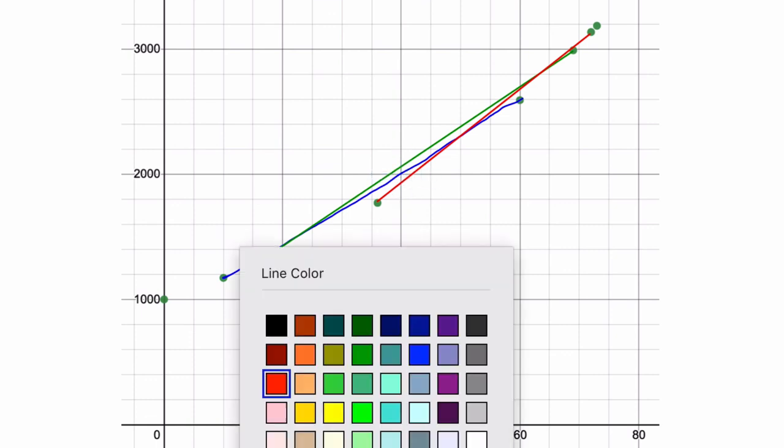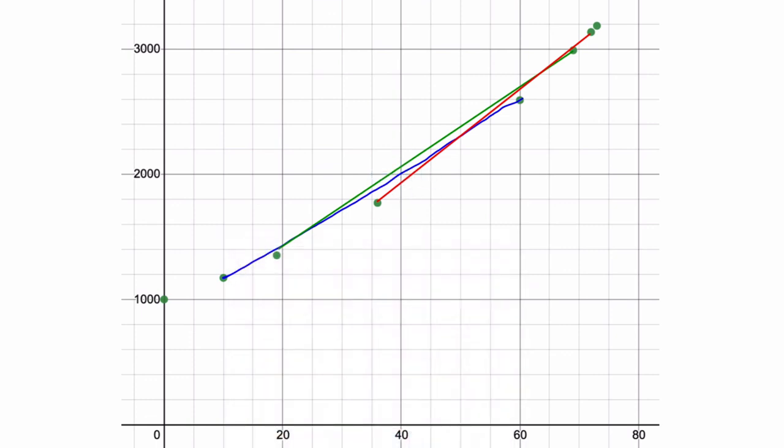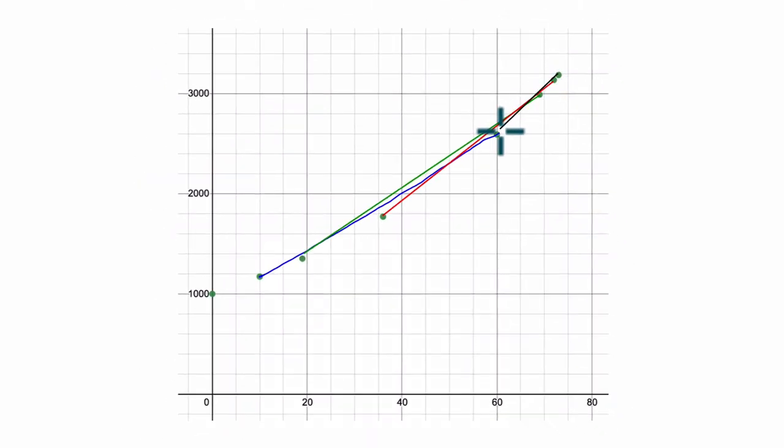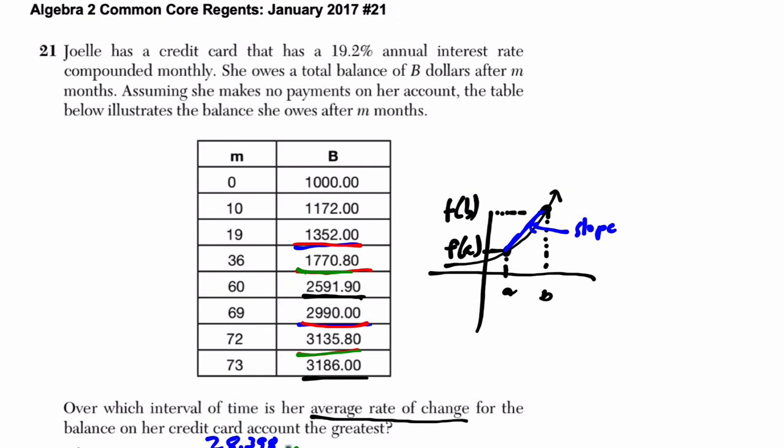And then, finally, we finished off with month 60 through 73, the last data point we have. And you can see that that line is clearly steeper than the others. So, this line is the steepest which corresponds to the greatest average rate of change. And that brings us to choice four. All right. I hope that helped.